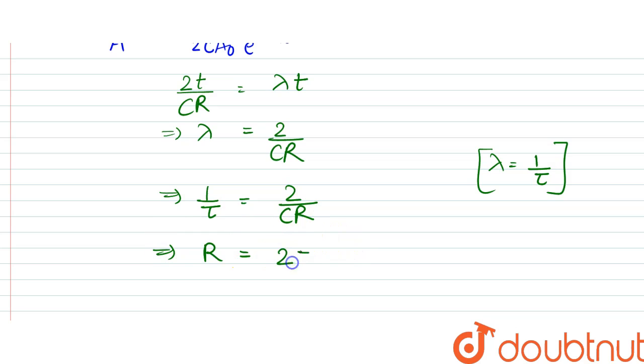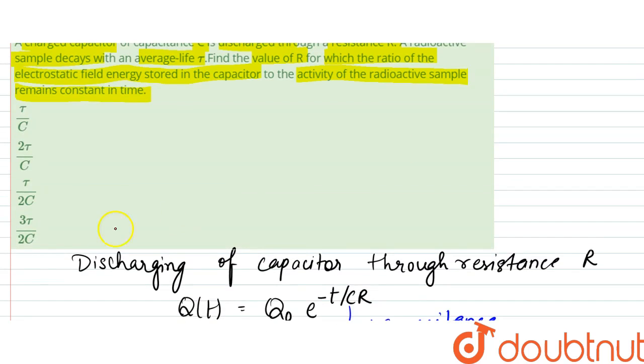So the amount of resistance would be equal to 2τ by C. So our answer should be equal to 2τ by C. So that is option B.